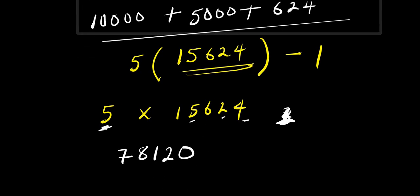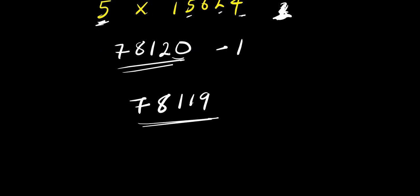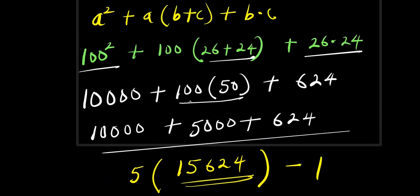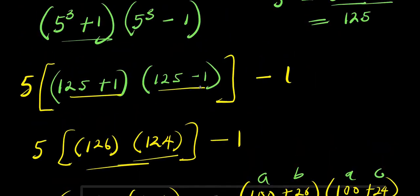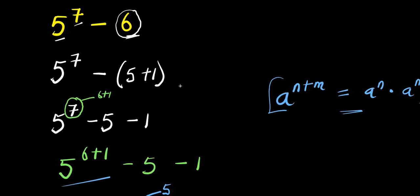We have this product, and now we subtract 1 from it. When we do that, we get 78,119, because 78,120 minus 1 is 78,119. So this becomes our final answer without the use of a calculator for 5 to the power of 7 minus 6: it equals 78,119. Thank you and goodbye. Don't forget to subscribe and share this video with your friends if you got value. Drop a comment in the comment box and don't forget to like. Thank you guys, see you again.